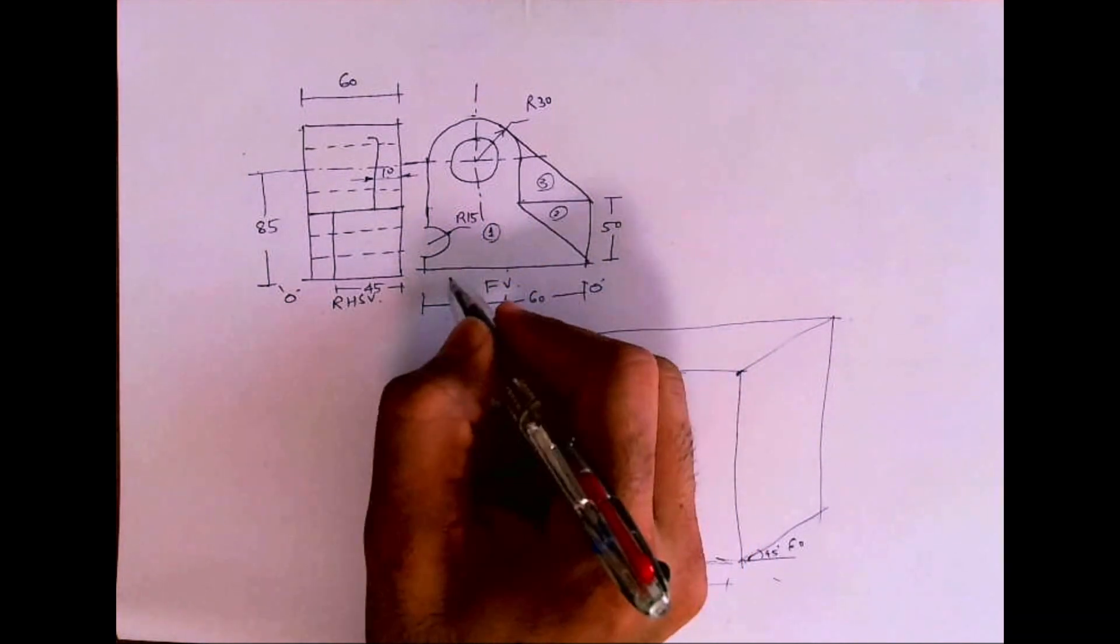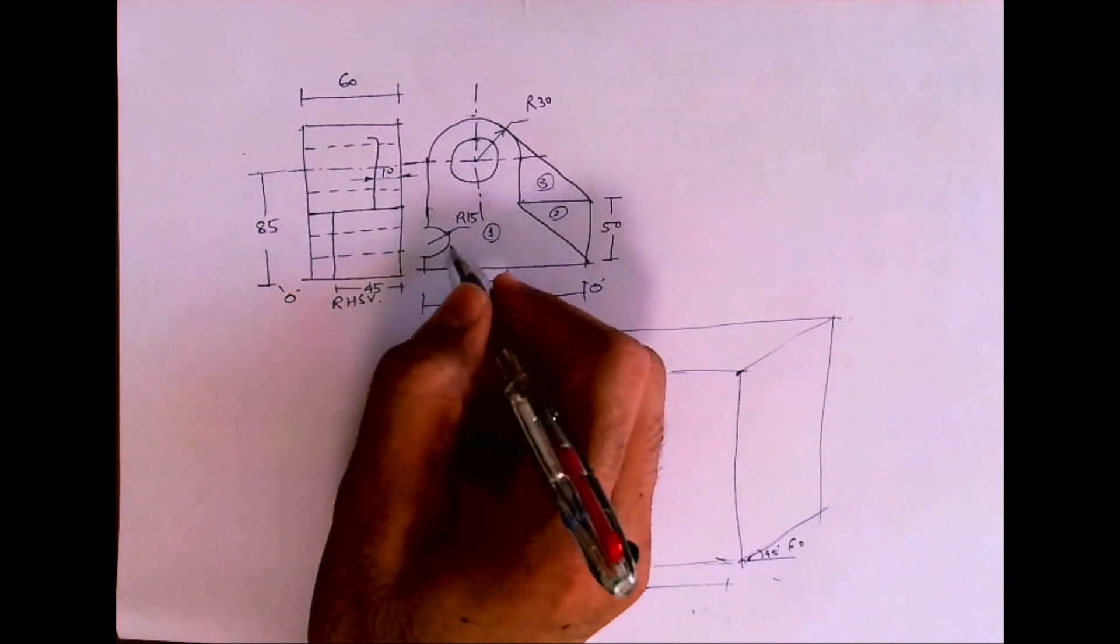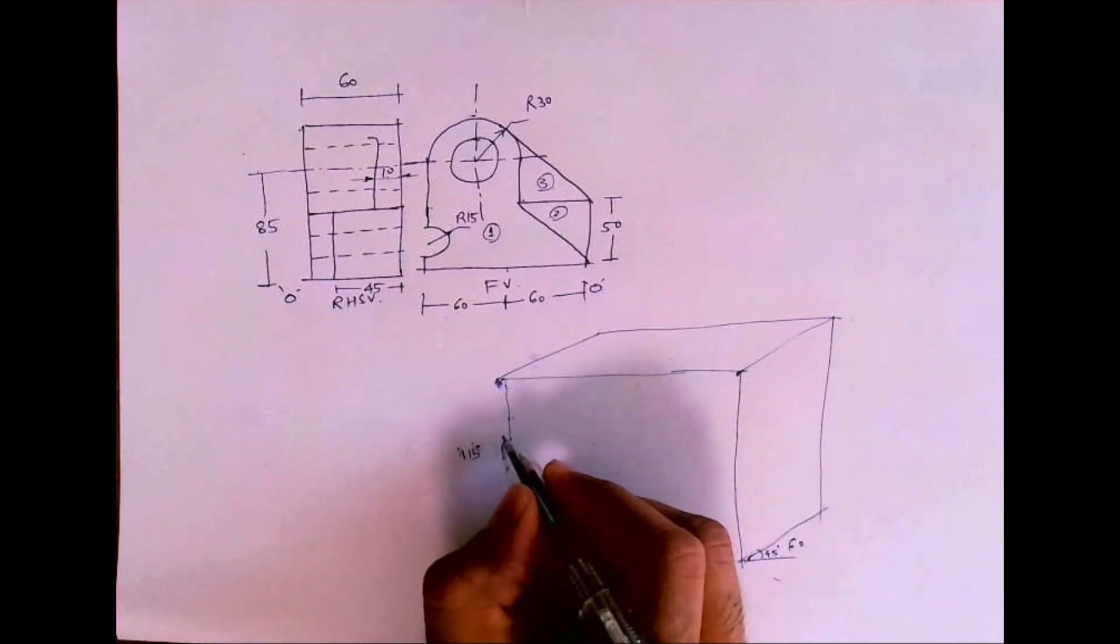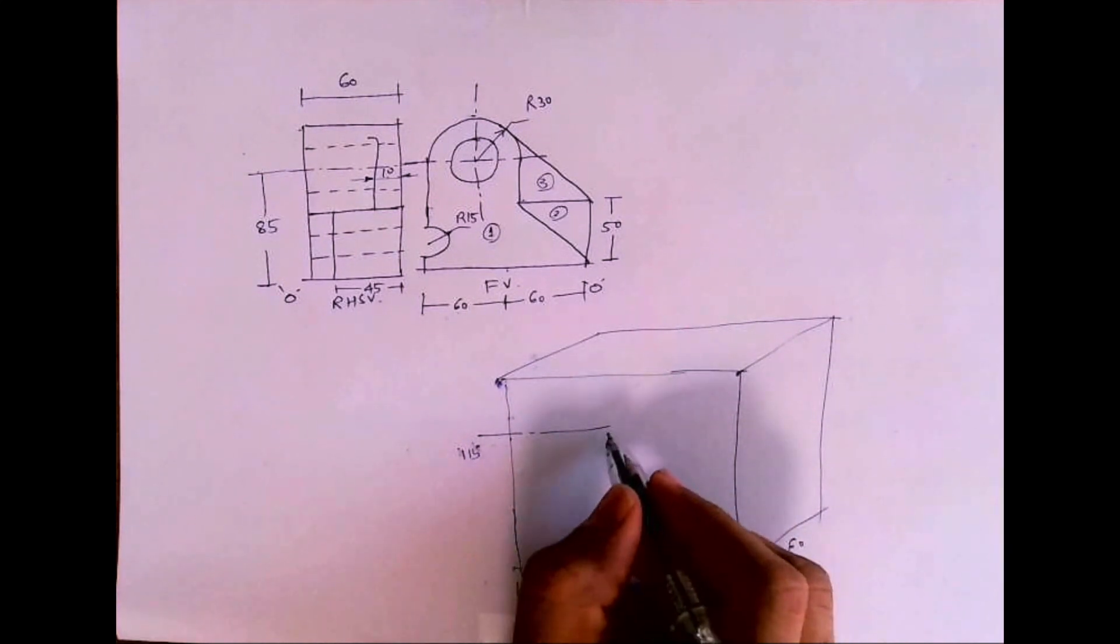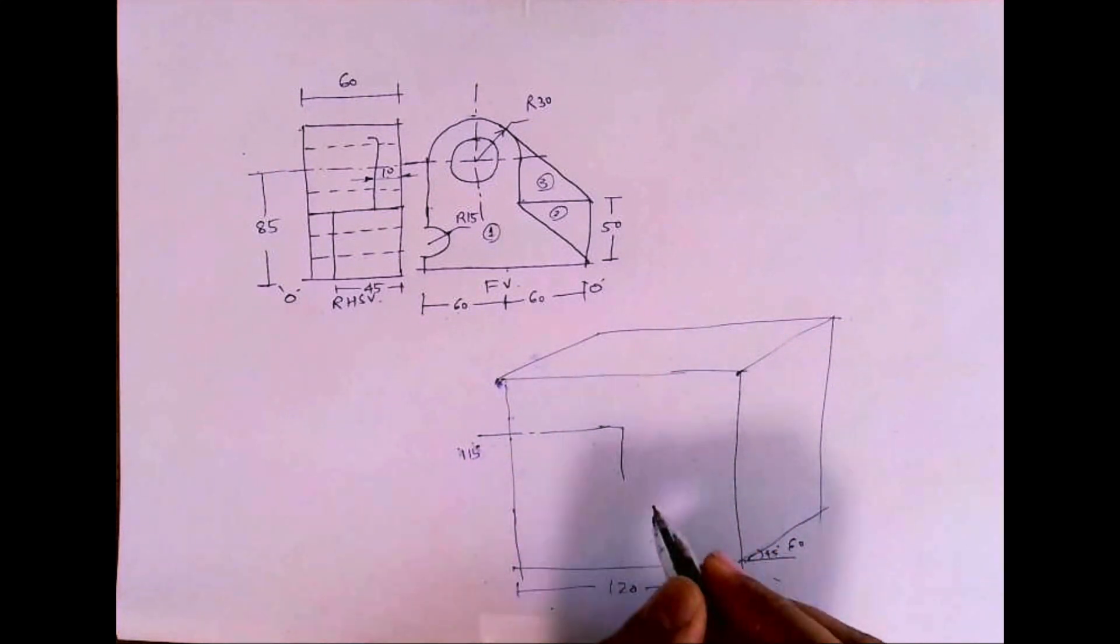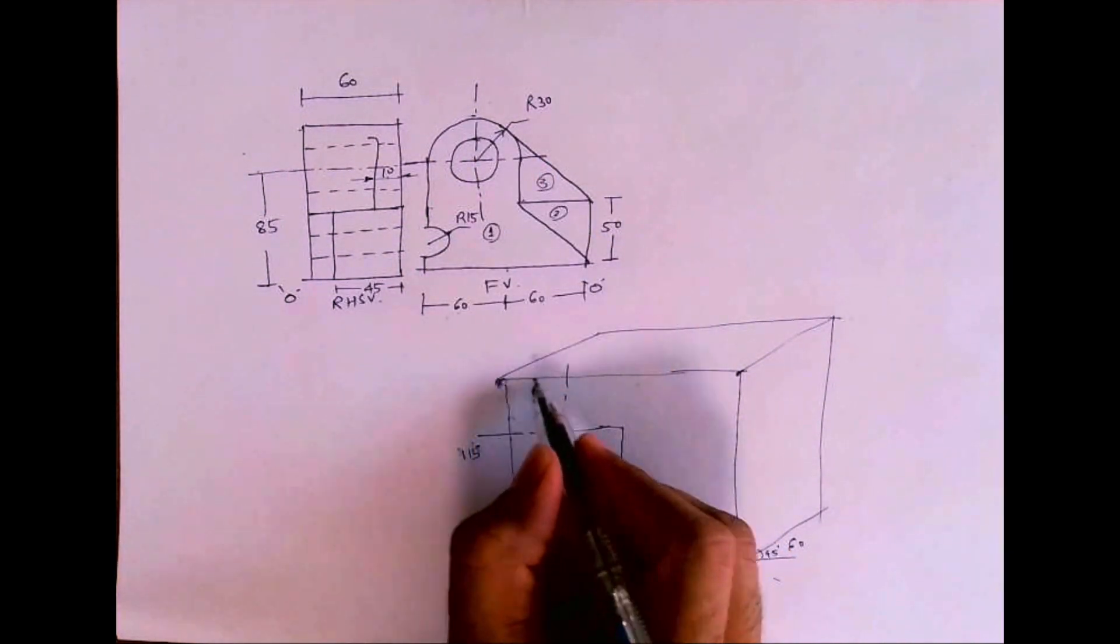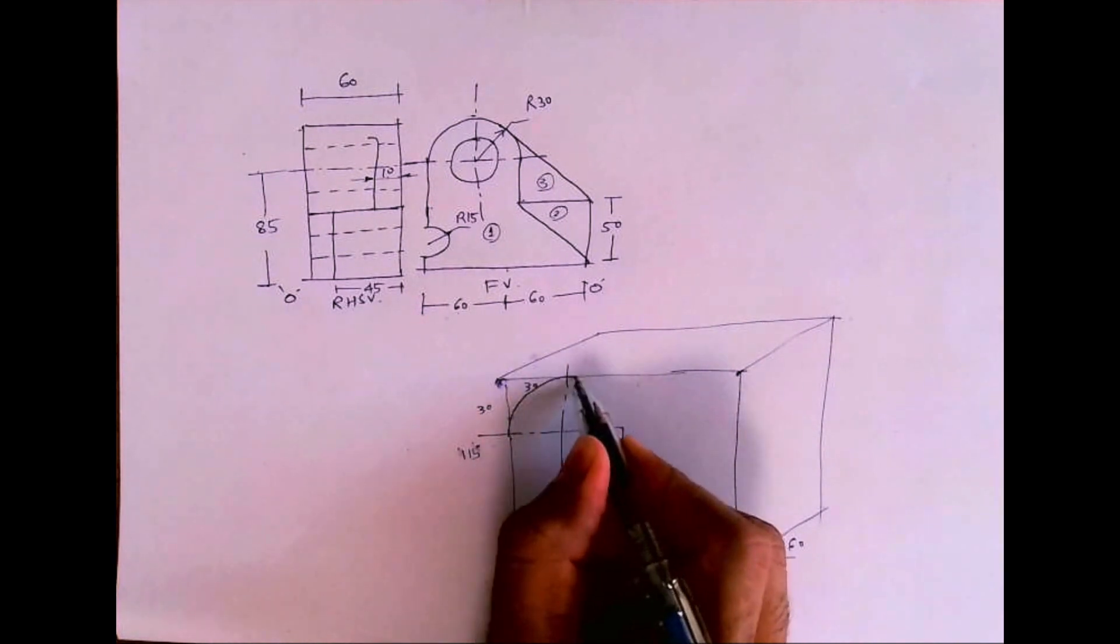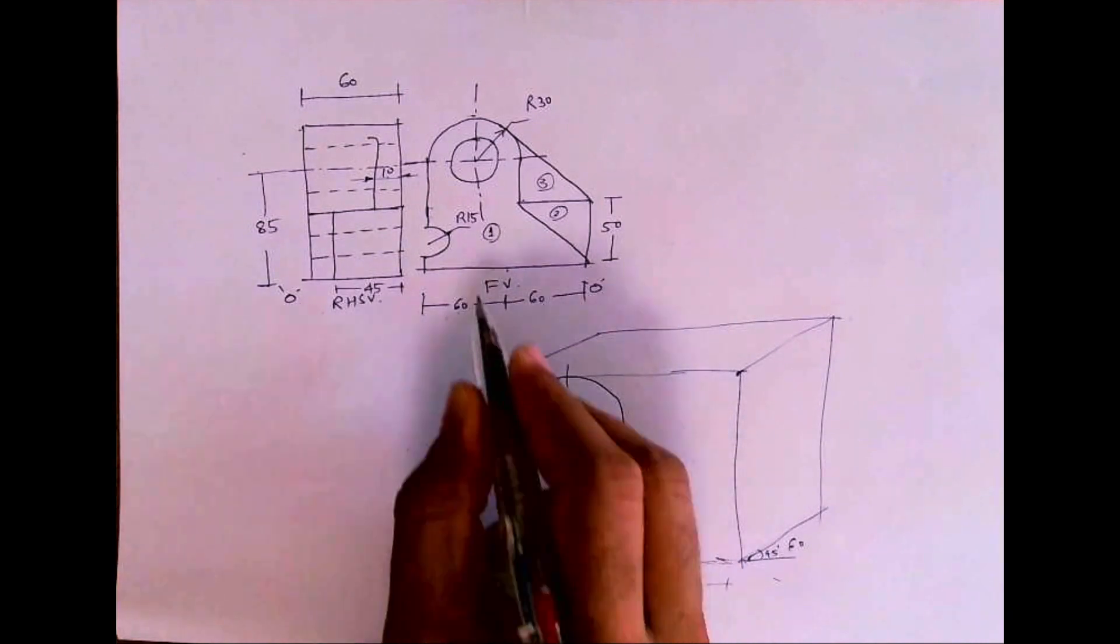With this semicircle, we'll draw that first. So I'll take 30, 30. See how much is this? 30. Then go down by 30 and draw a circle, semicircle. Draw a circle with diameter 30.